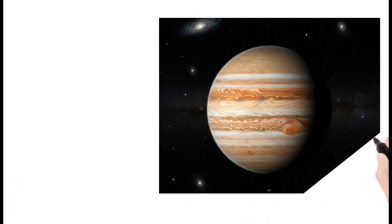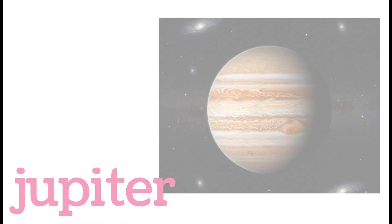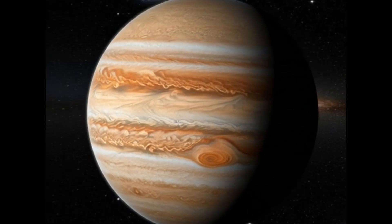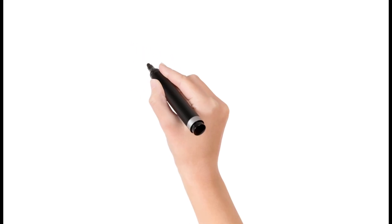Next, Jupiter. Jupiter is the largest planet in the solar system. It has a giant storm called the Great Red Spot. The planet is made mostly of gas. It has many moons.